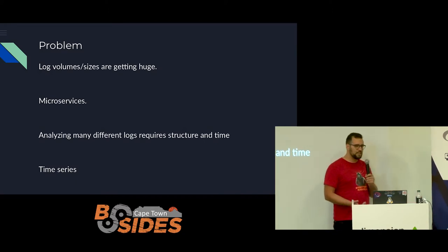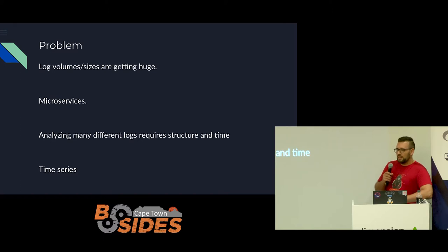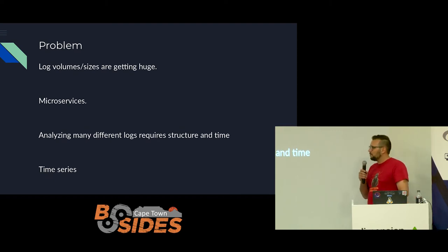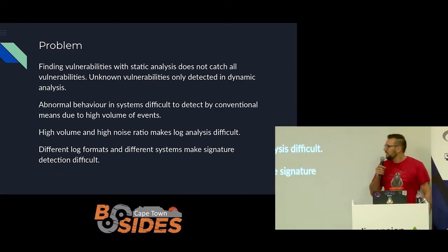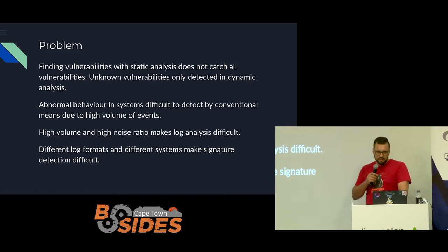Generally the problem: I looked at anomaly detection because for me the holy grail is to find something that wasn't there — a new zero-day, or something no one saw before. We're starting to do a lot of microservices, we've got huge log volumes, writing grep scripts to analyze logs becomes tiresome, and not everything is necessarily in a time series already. Static analysis doesn't catch everything, and it's still difficult to find normal behavior in systems.